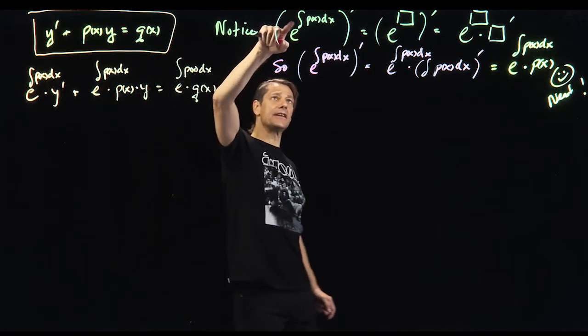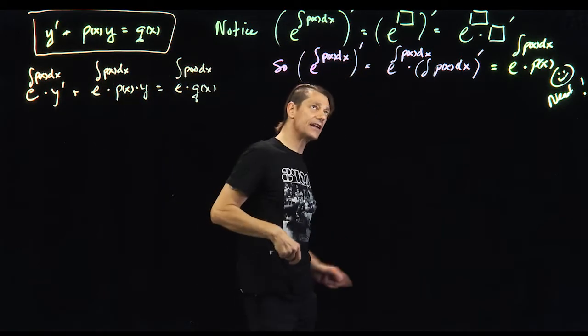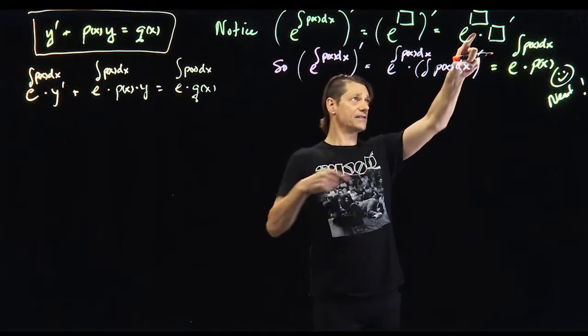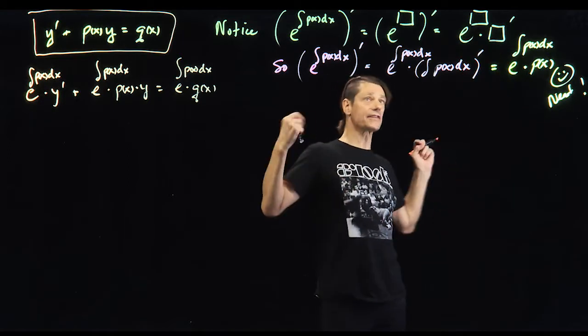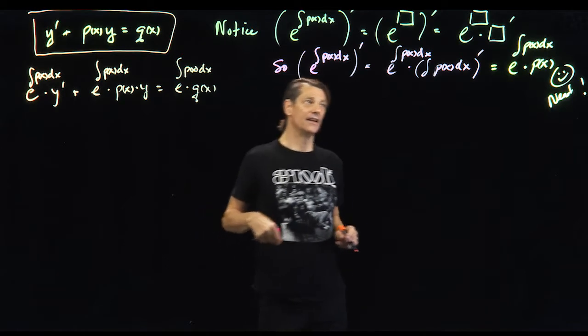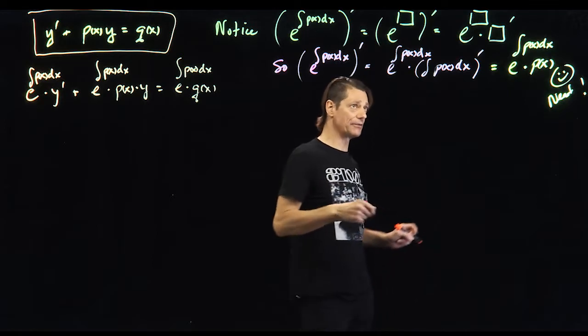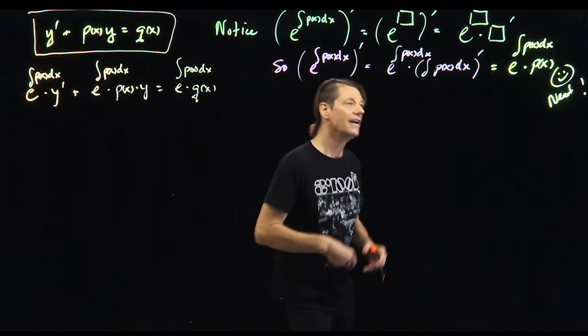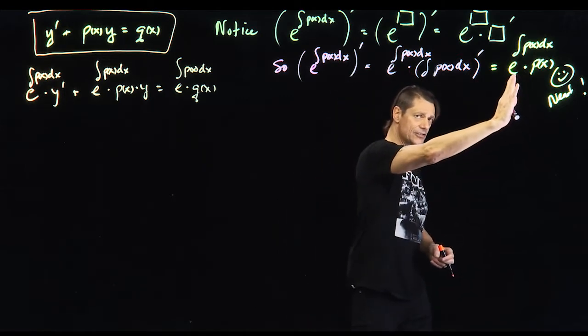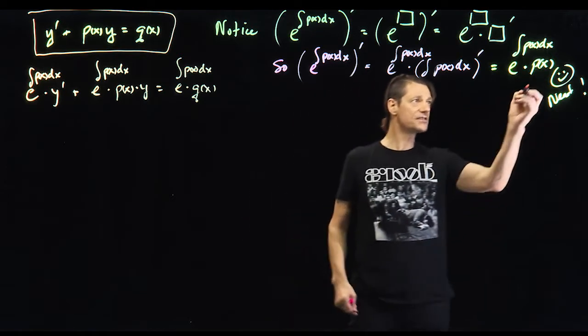Now notice if I have e to the integral of px, this little px right here, dx, the derivative of this is by blob calculus e to the box. The derivative of e to the box, it spits out an e to the box times the derivative of box. So the derivative of e to the antiderivative of p of x dx is just e antiderivative p of x dx times the derivative of the antiderivative of p of x dx. The derivative of an antiderivative, so the antiderivative unties the shoe or it pops it out. The derivative ties the back, ties the shoe back up. It basically just spits out this p of x.